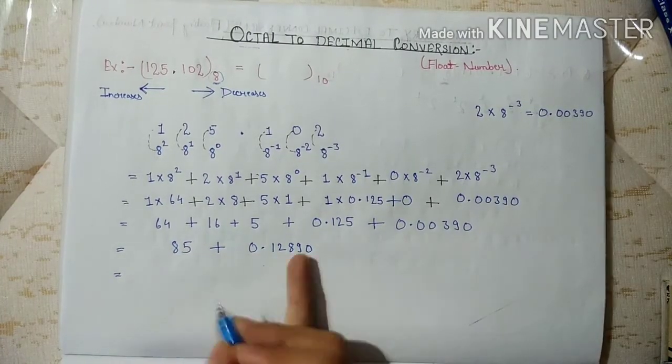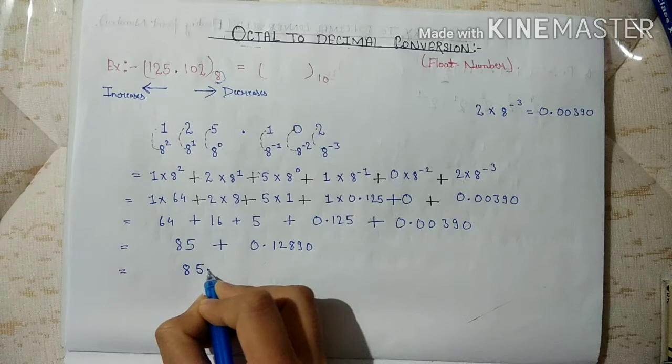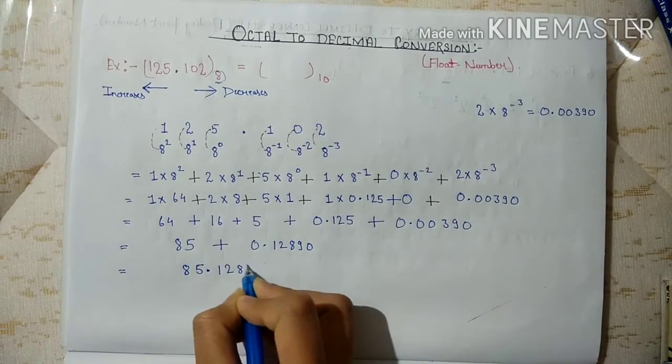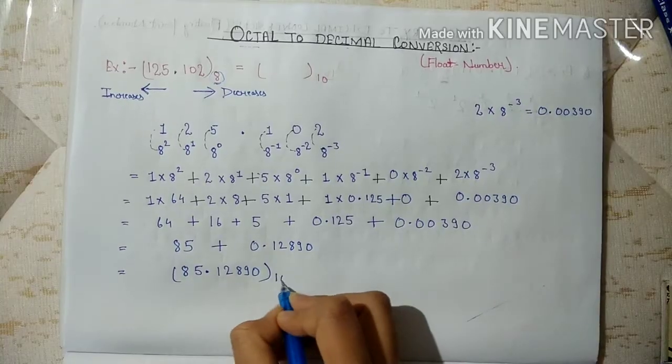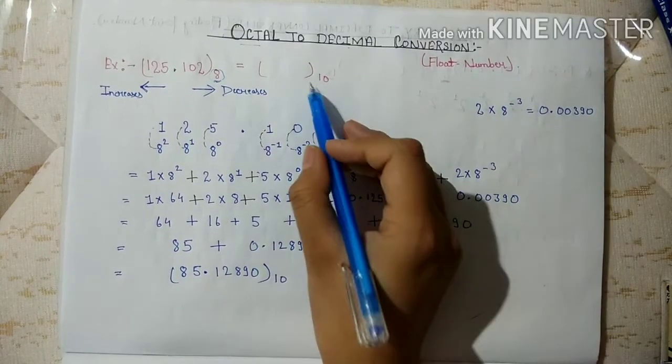Now, add these 2, and we get 85.12890 in decimal form, which is our required answer.